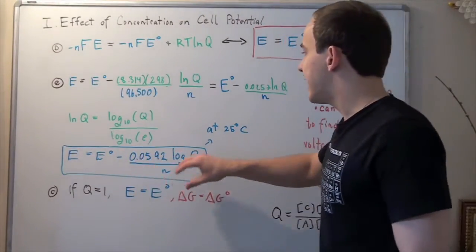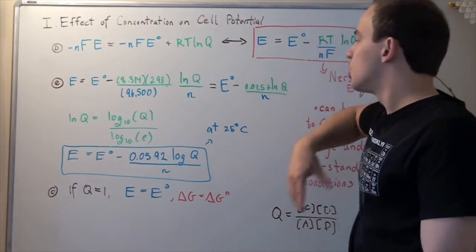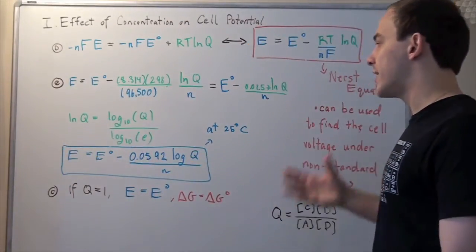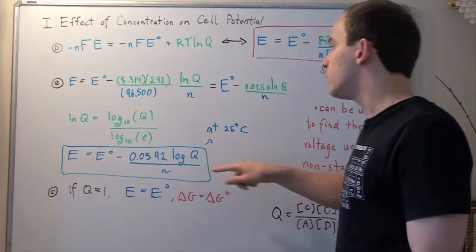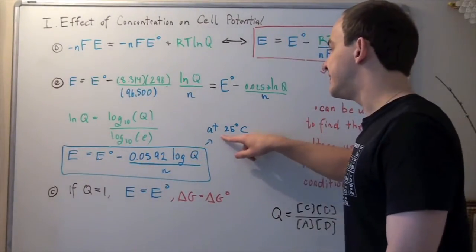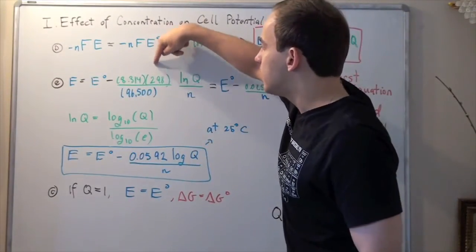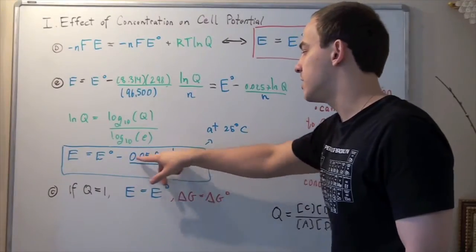So once again, we take this, we plug it into this lnQ, we use a calculator to find this number, and our final Nernst equation at 25 degrees Celsius is this following equation. Now, if this was a different temperature, I'd go back to my equation in part E, and I'd plug in a different temperature here and solve it the same way, and get a new numerical value here.